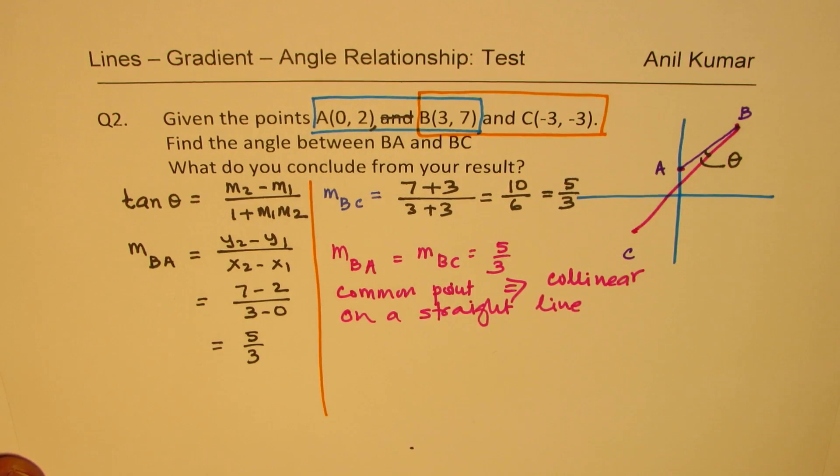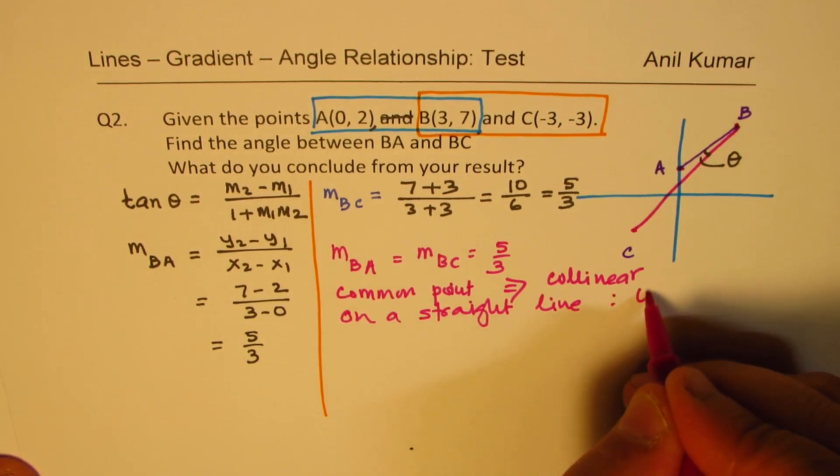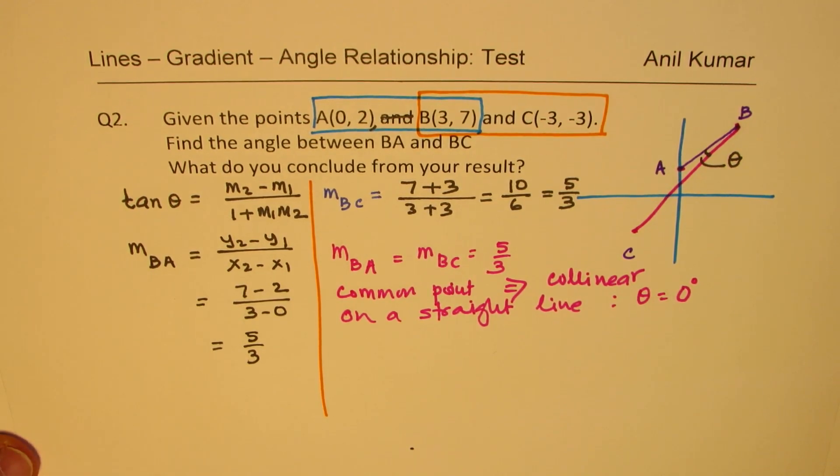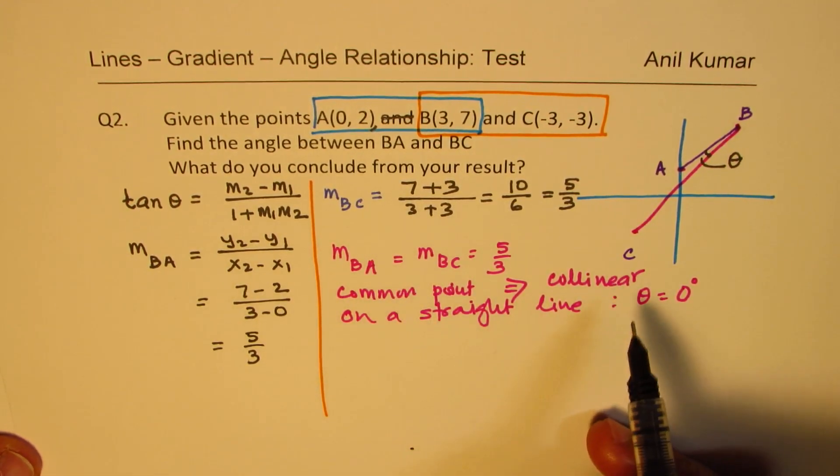So if they are on a straight line, then angle theta is 0 degrees. So if the slopes are exactly same, they are on the same line. So the slopes being same and point being common, that means they are collinear.